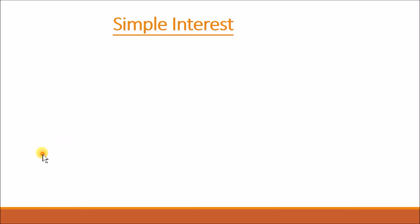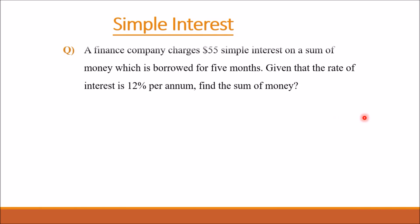Let's have another example. A finance company charges $55 simple interest on a sum of money borrowed for 5 months, given that the rate of interest is 12% per annum. Find the sum of money. The value of I is given, and the value of P, the sum of money, is required.